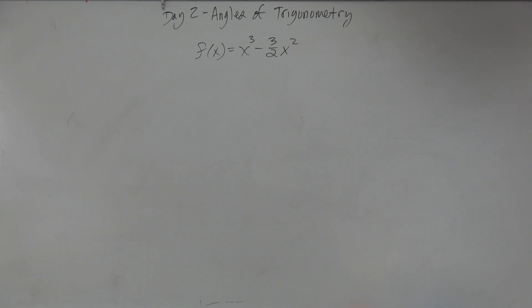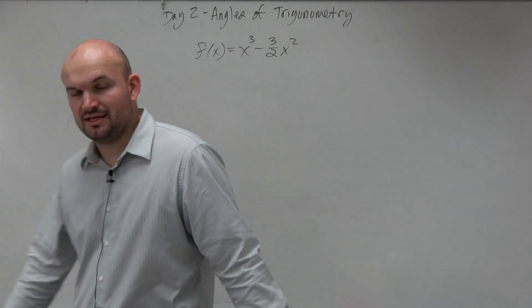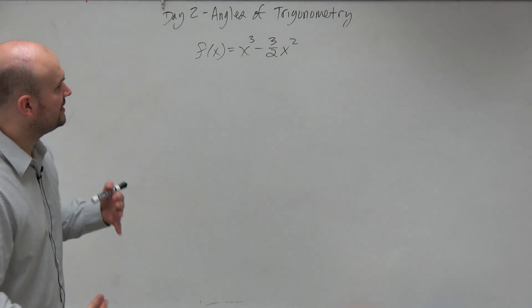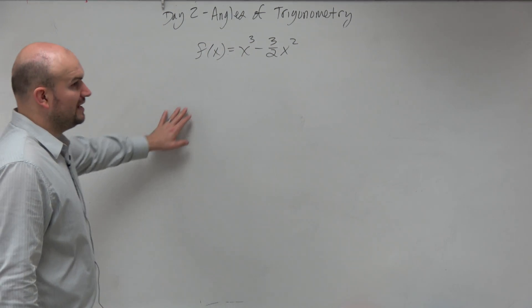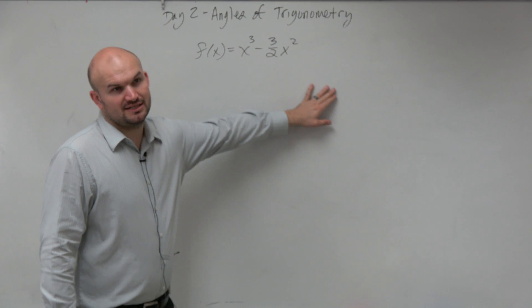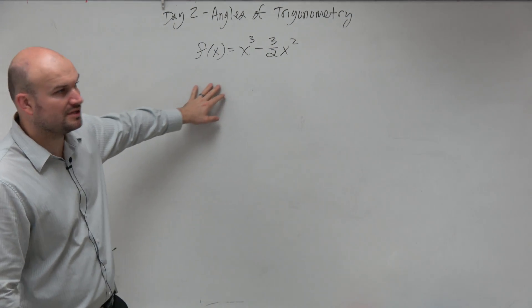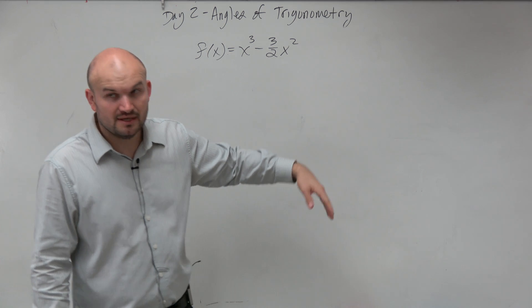I'll explain things as we go. So the first thing, when we're looking at identifying the relative max and mins, we're looking at whether this function is continuous. And we can say yes, it's a polynomial, so it looks nice and continuous.